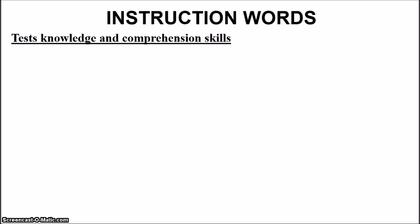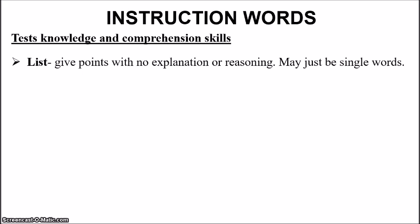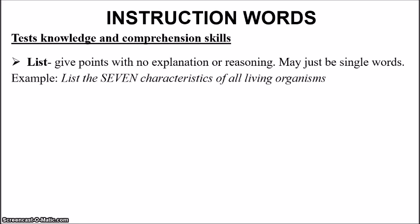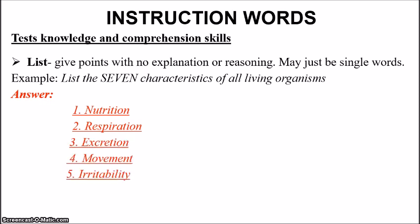Let's look at the first one: list. This is basic — you give points with no explanation or reasoning, usually just single words. For example, if I see a question saying 'list the seven characteristics of all living organisms,' you just simply list them: nutrition, respiration, excretion, movement, irritability, growth, and reproduction. That's all you need to give — no explanations, you're just listing.